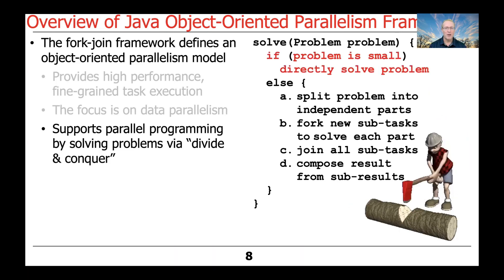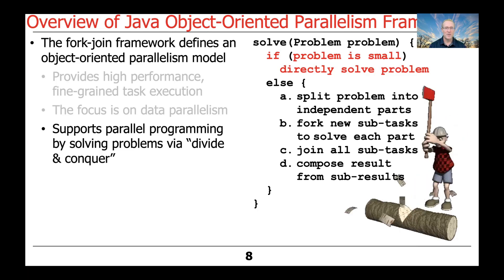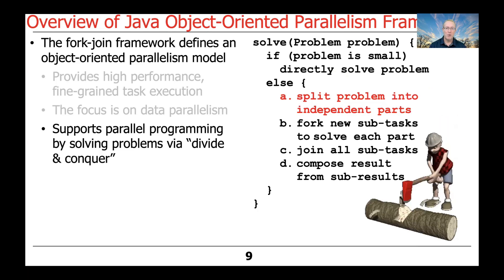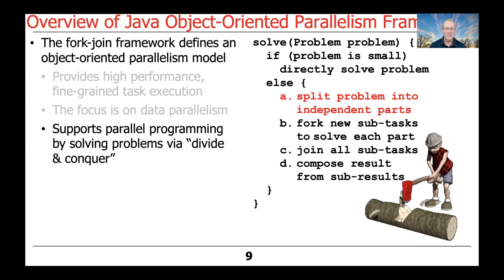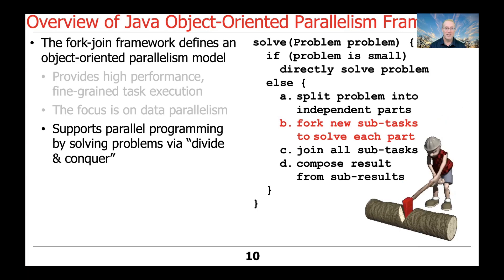Given a problem, if the problem is relatively small, then directly solve the problem and return the results. Otherwise, if the problem is larger, split the problem up into independent parts — say split it in half evenly — then go ahead and fork new subtasks to solve each of the parts that have been divided up into pieces.